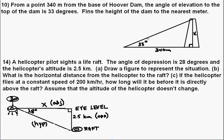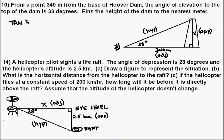Looking at the situation from the perspective of that angle, we see that the height we're looking for is the opposite side, and the 340 meters is the adjacent side. Our line of sight from our eye to the top of the dam is our hypotenuse. So looking at what's given to us and what we're trying to find, the ratio we're going to use is opposite over adjacent, which is tangent. So tan 33 degrees equals x over 340.